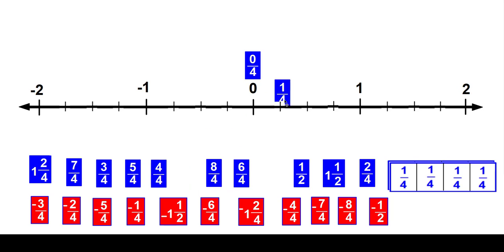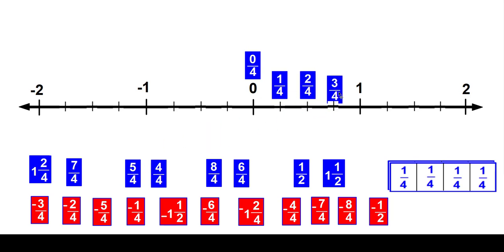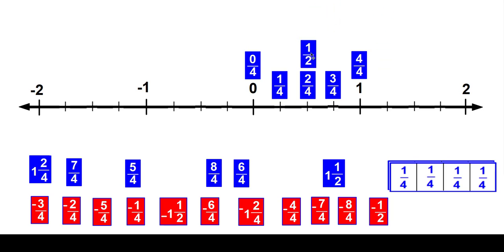Here is one fourth. And here would be two fourths. Here would be three fourths. And here would be four fourths. Doesn't that look right? And isn't two fourths halfway between zero and one? So isn't two fourths the same as one half? And four fourths — isn't that the same as one?